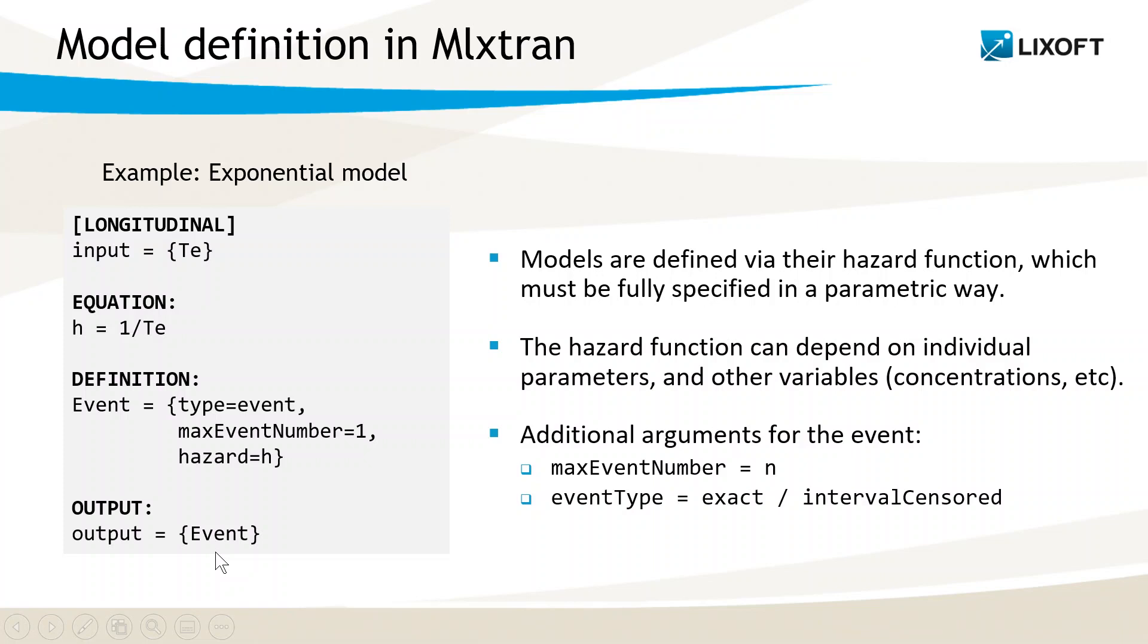Additional optional arguments allow defining the type of event. For one-off events, the maximal number of events per individual is 1. It is important to indicate it in the maxEventNumber argument to speed up calculations. When the events are not exactly observed but interval censored, it must be specified with eventType.